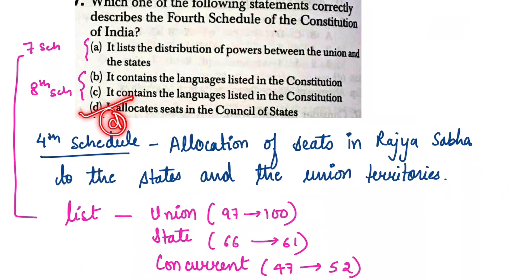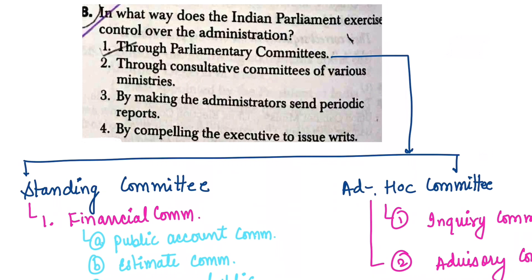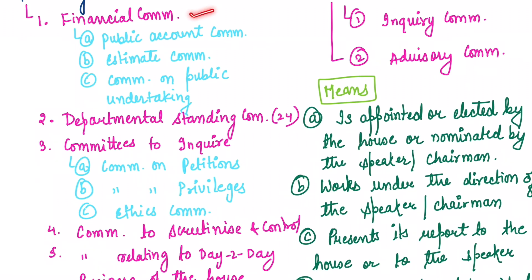The next question asks: in which way does the Indian Parliament exercise control over the administration? The first option is through parliamentary committees. Through consultative committees of various ministries — these do not control administration but serve a different purpose. The financial committees include the Public Accounts Committee, the Estimates Committee, and the Committee on Public Undertakings.